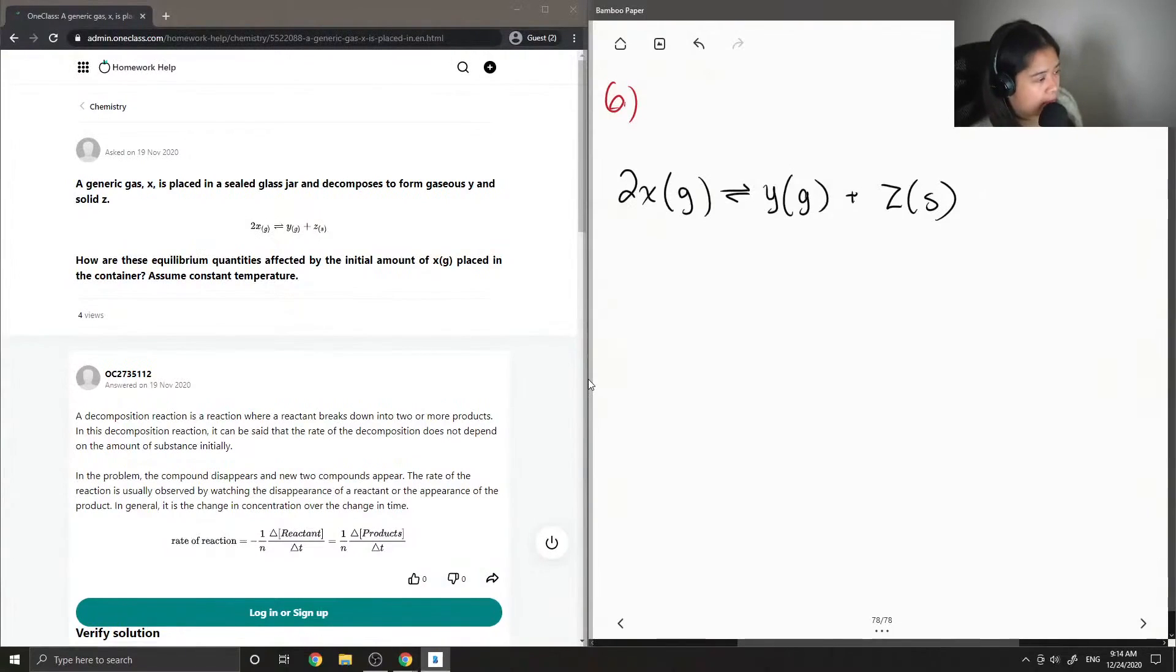How are these equilibrium quantities affected by the initial amount of X placed in the container? Assume constant temperature. Okay, so I'll just write down all the different quantities that are affected by the initial amount of X.